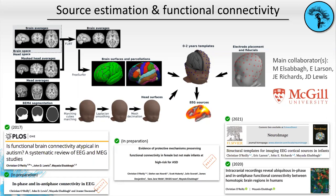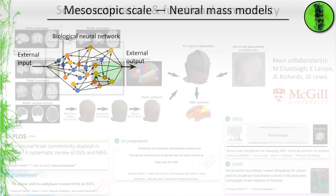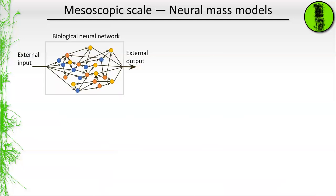But you're still working with signals that are kind of emergent — the result of the interaction of many individual cells. To better understand the generative mechanism, you have to go one scale lower. So I got interested in studying the generative mechanism at the mesoscopic scale — roughly at the scale of the cortical column or small brain regions. When you want to study the generative mechanism of EEG at that scale, one good approach is to use neural mass models.